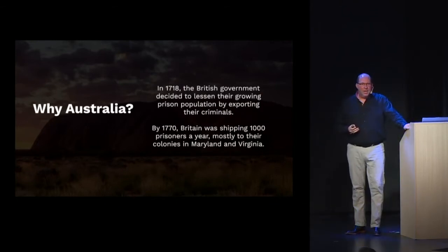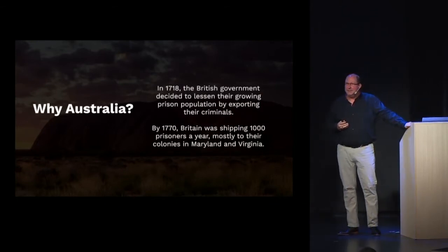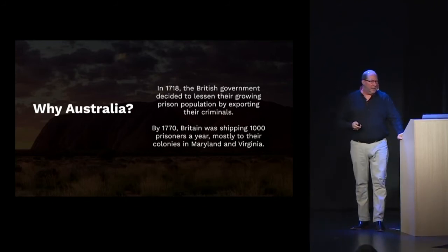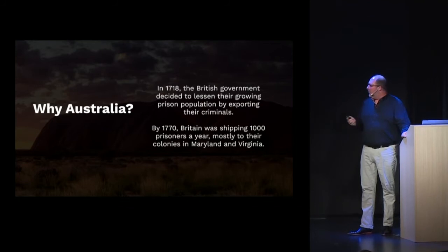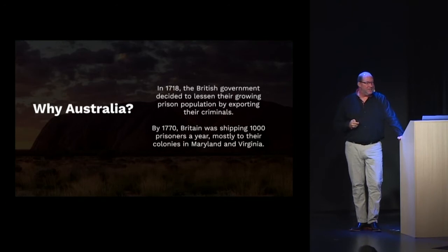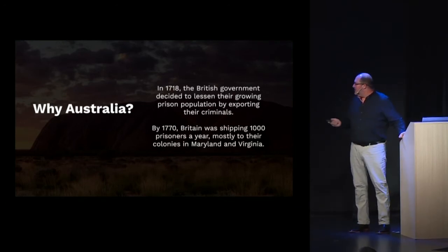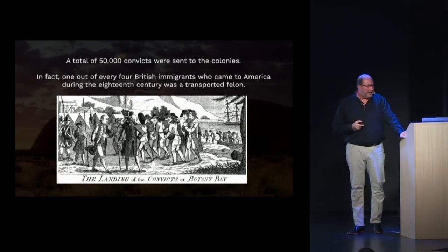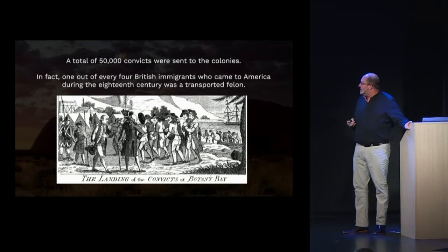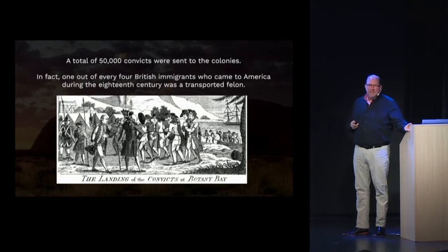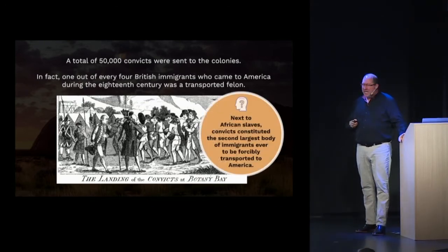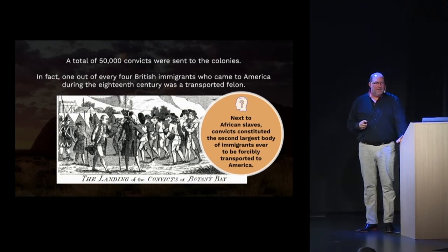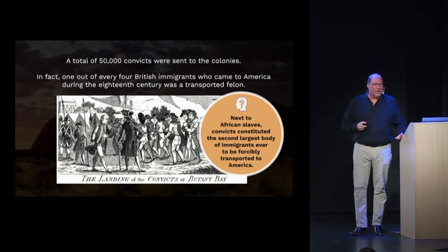Why Australia? It has a good deal to do with American independence. By 1770, Britain was shipping 1,000 prisoners a year mostly to their colonies in Maryland and Virginia. A total of 50,000 convicts were sent to the colonies. In fact, one out of every four British immigrants to America during the 18th century was a transported felon. Next to African slaves, convicts constituted the second largest body of immigrants ever forcibly transported to America.